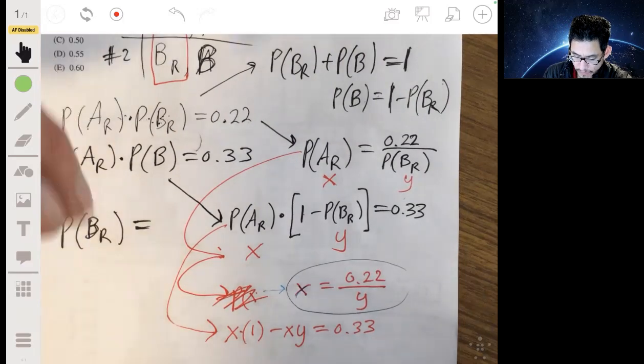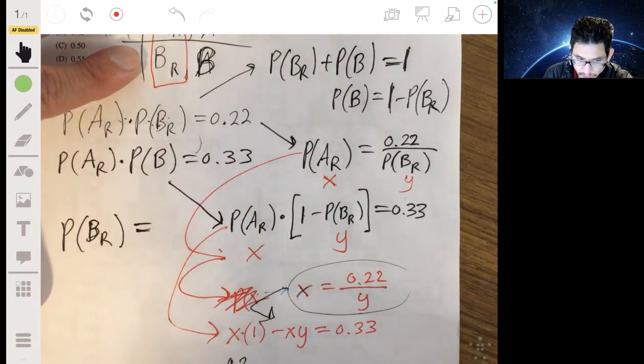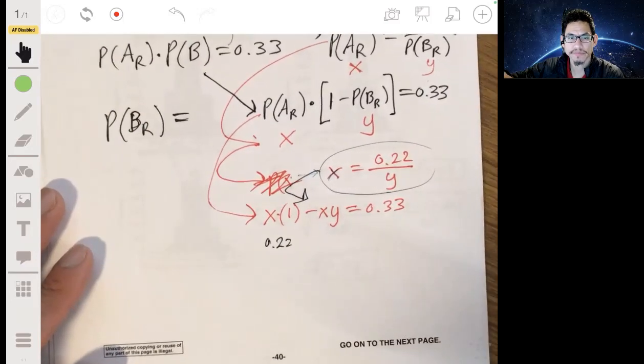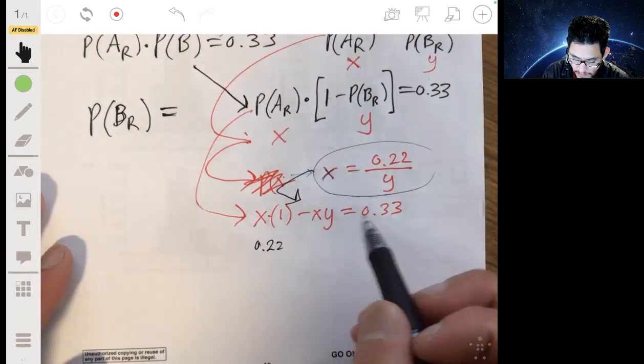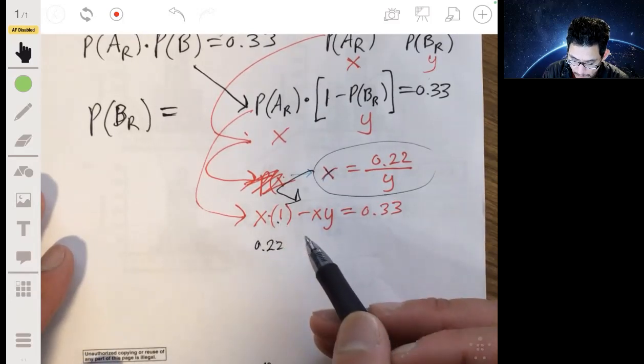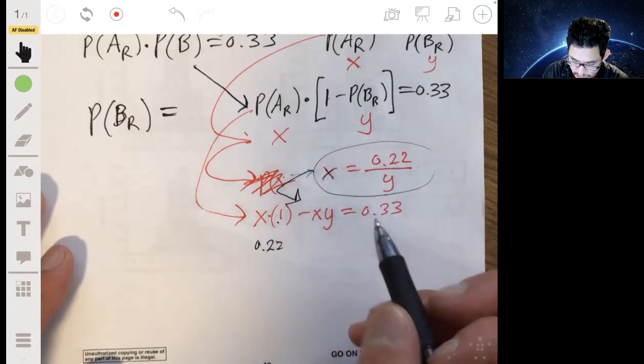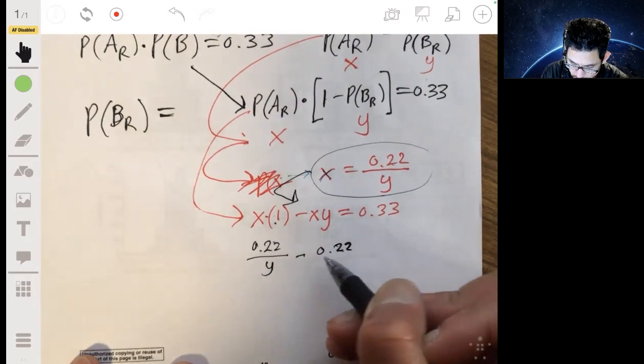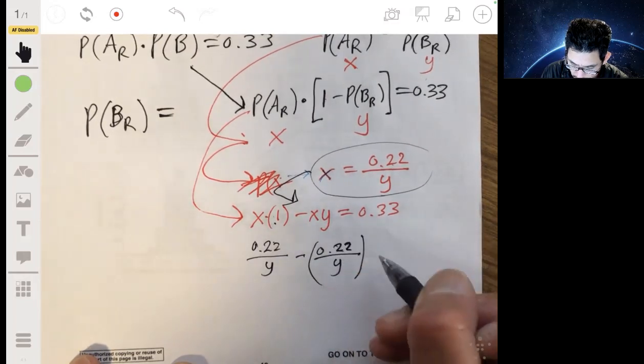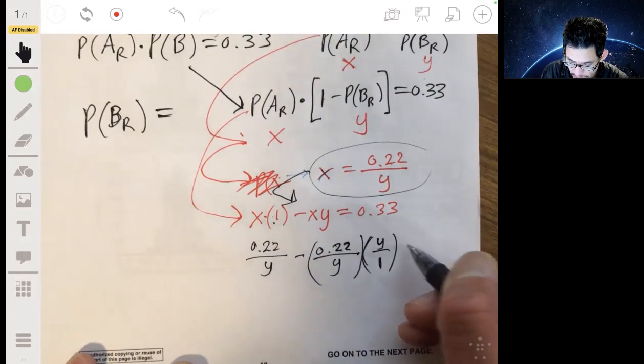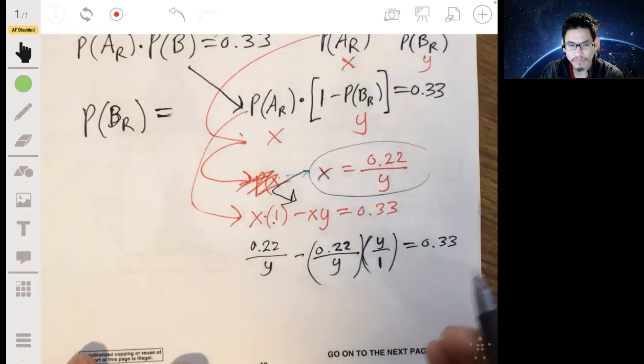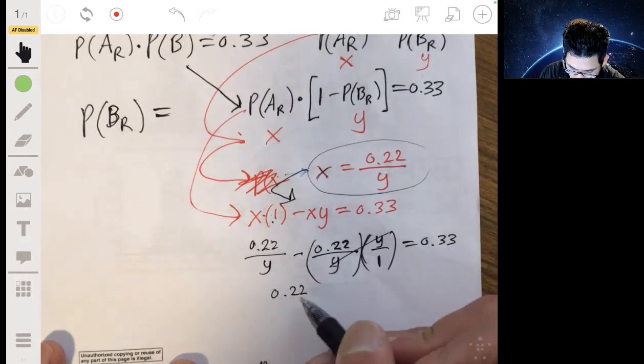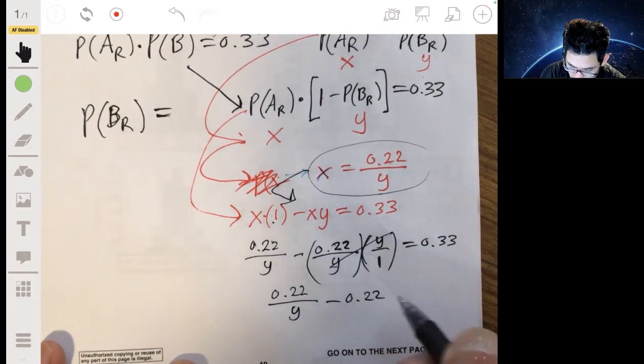Let me zoom out a little bit. So I'm going to do 0.22 for this. Replacing that with that. 0.22 over Y minus 0.22 over Y times Y, or just times Y over 1, equals 0.33. So these Ys will cancel. And I'll essentially just get 0.22 over Y minus 0.22 equals 0.33.